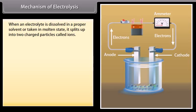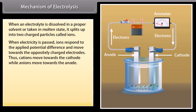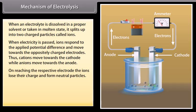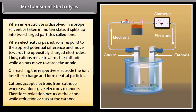Mechanism of electrolysis. When an electrolyte is dissolved in a proper solvent or taken in molten state, it splits up into two charged particles called ions. When electricity is passed, ions respond to the applied potential difference and move towards the oppositely charged electrodes. Thus, cations move towards the cathode while anions move towards the anode. On reaching the respective electrode, the ions lose their charge and form neutral particles. Cations accept electrons from cathode whereas anions give electrons to anode. Therefore, oxidation occurs at the anode while reduction occurs at cathode.